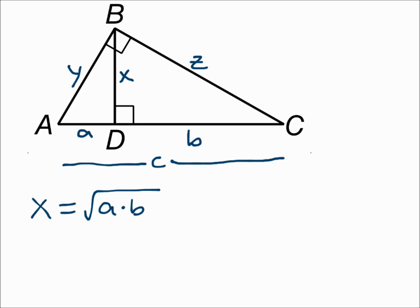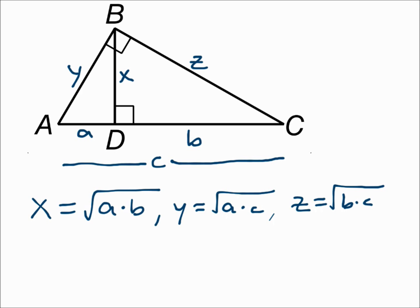Using the same logic, we get the other two formulas for the legs. The leg on the left, Y, uses the part of the hypotenuse on that side, which is A, and the whole hypotenuse C. Z is a mirror image: Z is the other leg, it uses the part of the hypotenuse on Z's side, which is B, and the whole hypotenuse C. So the legs are the geometric mean of the part of the hypotenuse on their side and the whole hypotenuse.